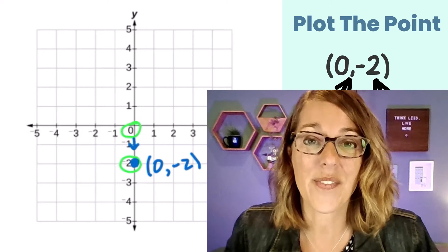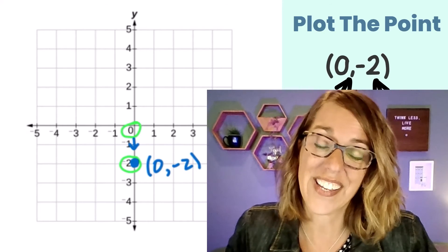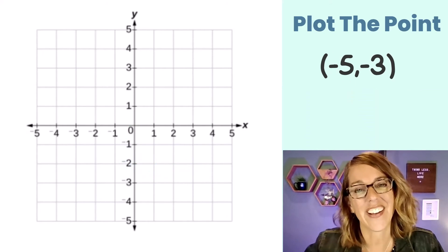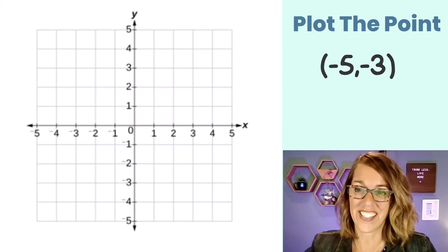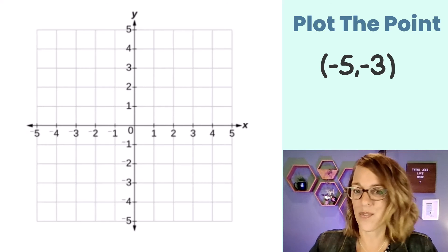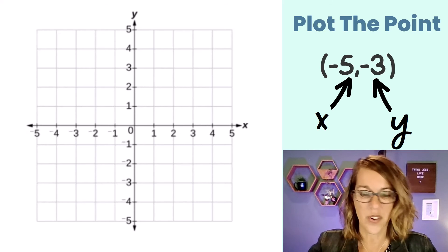I have a feeling you're doing great so far. I've got one more that we'll do together, and then I've got some for you to do. This last one together is (-5,-3), the X and Y coordinates.